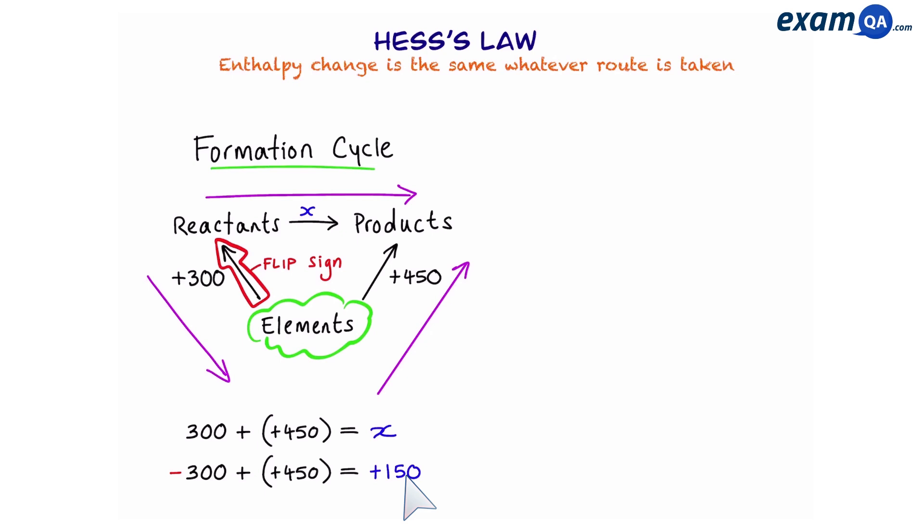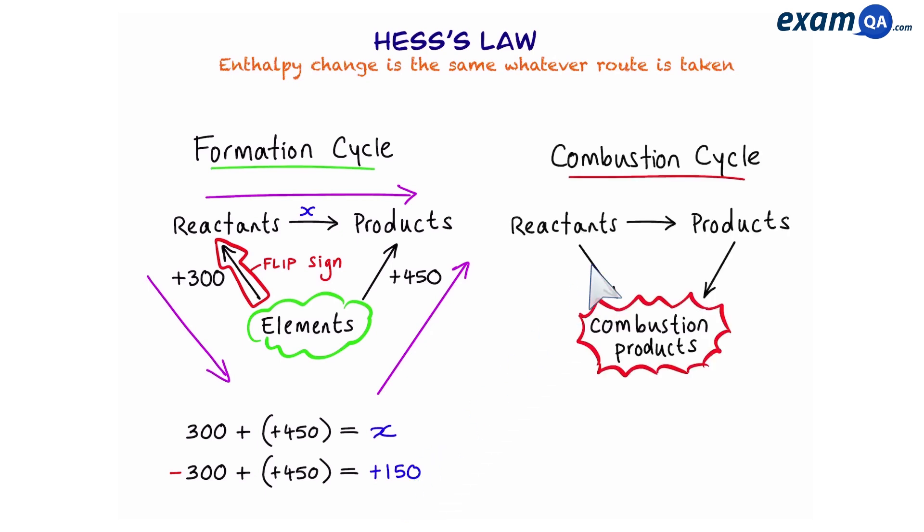So that was how to do a formation cycle. We'll do an example later. Let's move on to the combustion cycle. This time, we're going to point down from reactants and products to our combustion products. Again, let's say we want to work out the value of x and the value of the arrows have been given to us. We said that we can add the two arrows and that should give us the value of x.